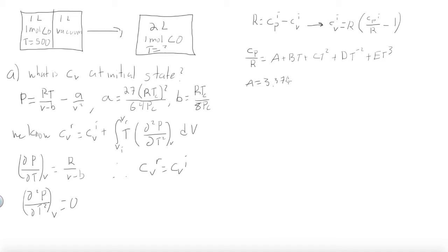And for carbon monoxide, the following terms are known. A is equal to 3.376. B is equal to 0.557 times 10 to the minus 3. And D is equal to negative 0.031 times 10 to the 5. There are no C terms and E terms. Both of them are equal to 0.